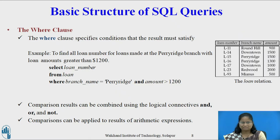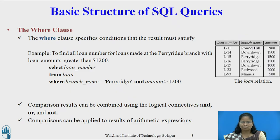Comparison results can be combined using the logical connectives AND, OR, and NOT. The operands of the logical connectives can be expressions involving the comparison operators: less than, less than or equal to, greater than, greater than or equal to, and not equal to. Comparisons can be applied to the results of arithmetic expressions.